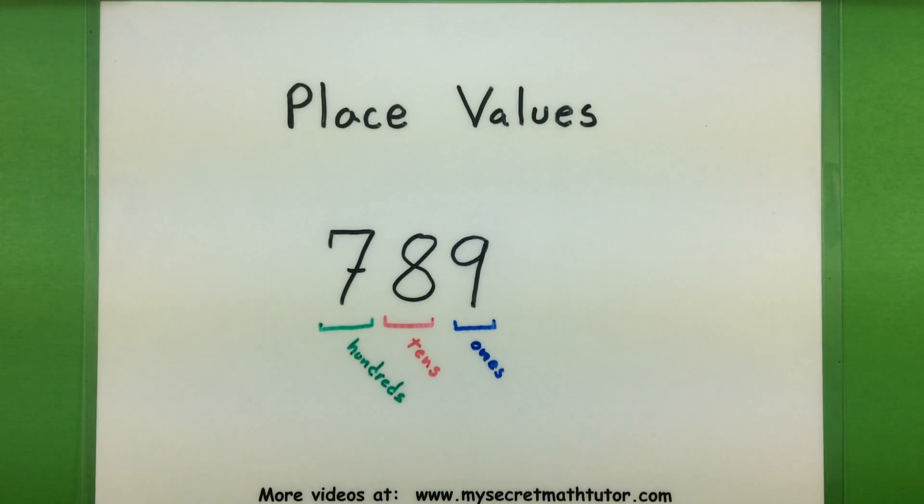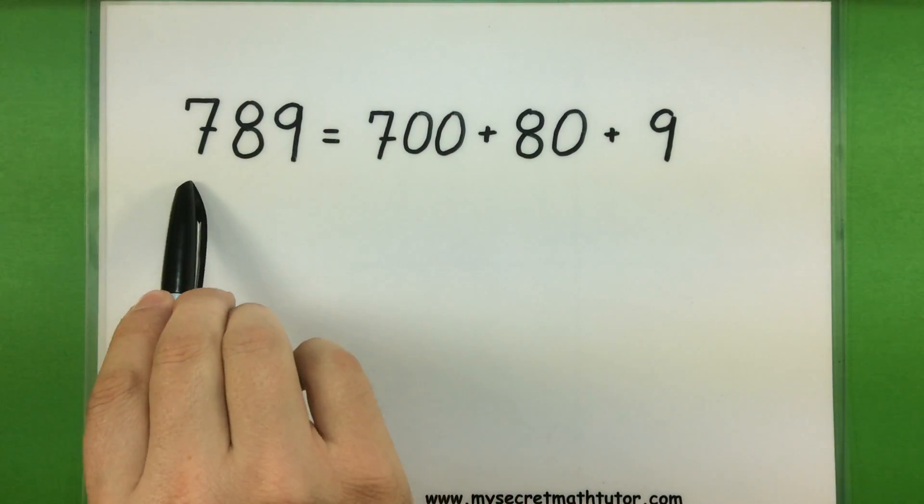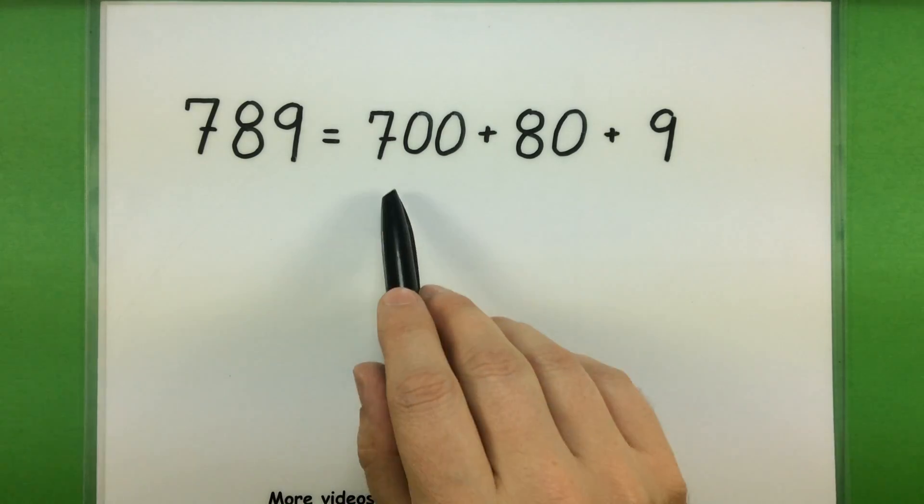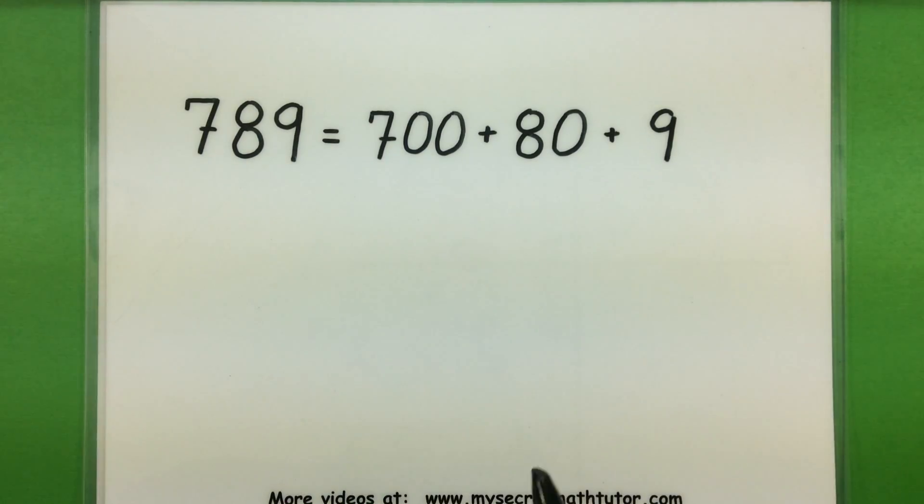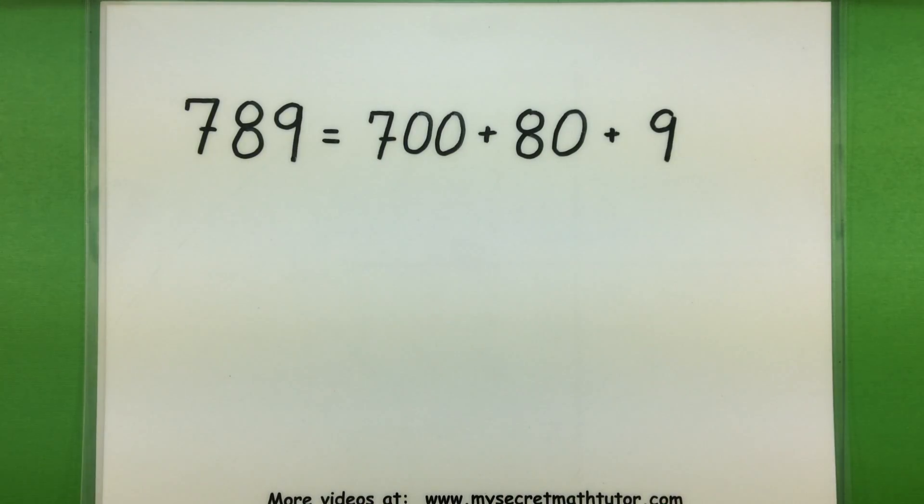To make this idea a little bit more clear, you can think of taking a number and really breaking it down into those individual groups. Here I have 789, and you can see that I have 7 groups of 100, I have 8 groups of 10, and then I just have 9 single ones.